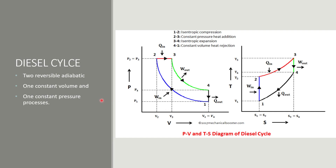Now we have the diesel cycle, that is a compression ignition cycle — we don't have spark plugs in this cycle. First we have an isentropic compression from 1 to 2, then we have a constant pressure heat addition. Finally, we have an isentropic expansion process 3 to 4, and then an exhaust process that is a constant volume heat rejection process.